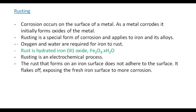Oxygen and water are required for iron to rust, and rust is hydrated iron trioxide. Sometimes we see rust written as Fe2O3·XH2O. Rusting is an electrochemical process.